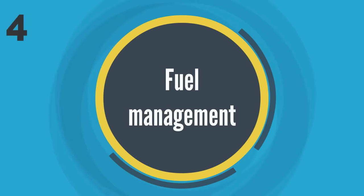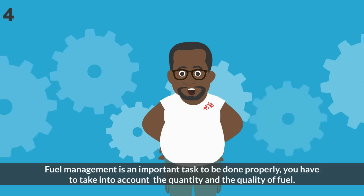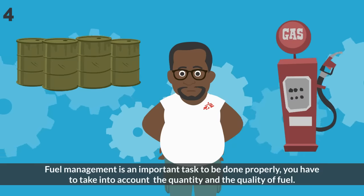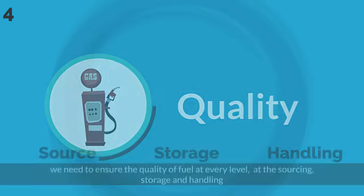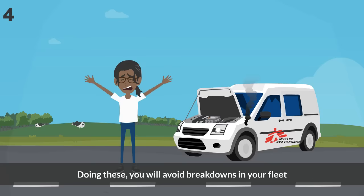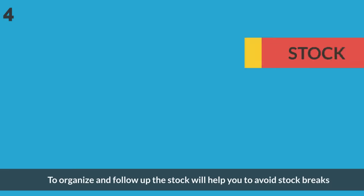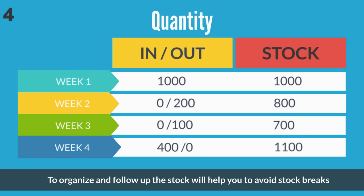Four: Fuel management. Fuel management is an important task to be done properly. You have to take into account the quantity and the quality of fuel. Quality: we need to ensure the quality of fuel at every level — at the sourcing, storage, and handling. Doing this, you will avoid breakdowns in your fleet. Quantity: to organize and follow up the stock will help you to avoid stock breaks.